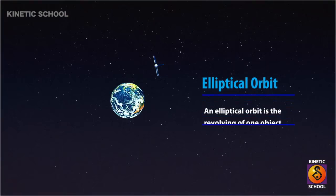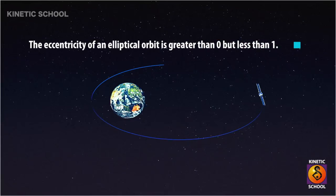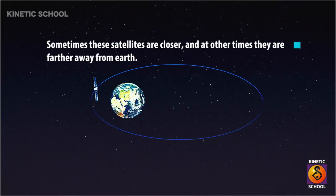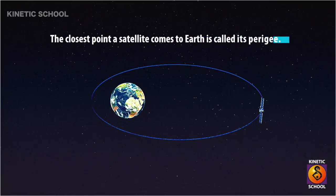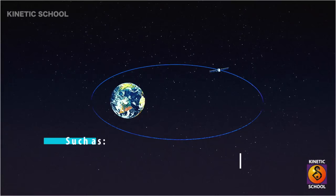An elliptical orbit is the revolving of one object around another in an oval-shaped path called an ellipse. The eccentricity of an elliptical orbit is greater than zero but less than one. Sometimes these satellites are closer, and at other times they are farther away from Earth. The closest point a satellite comes to Earth is called its perigee, and the farthest point is the apogee. The most common example of an elliptical orbit is the highly elliptical orbit.